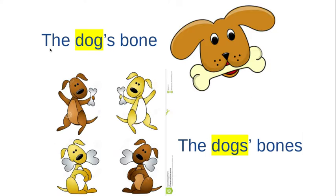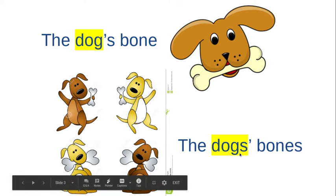The next example is the dog's bone. There is one dog, so we use apostrophe S: the dog's bone. If we have more than one dog, that would be dogs plural. We put the apostrophe after the S to show that it is the dogs' bones, meaning more than one dog.